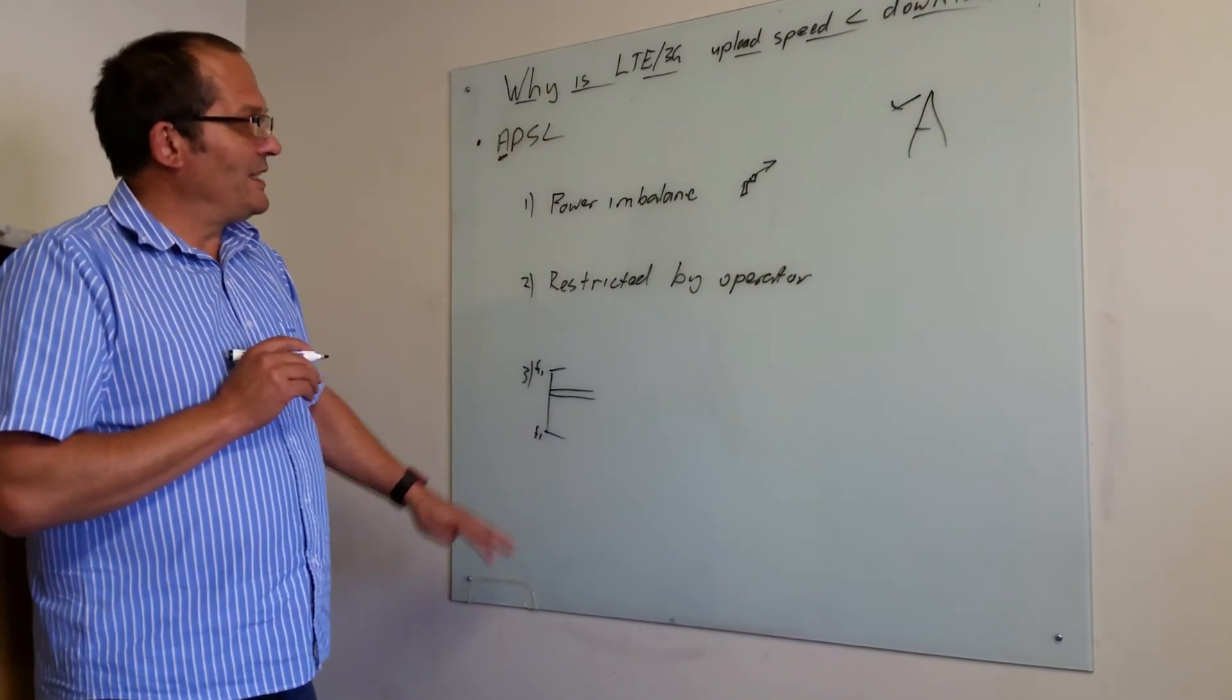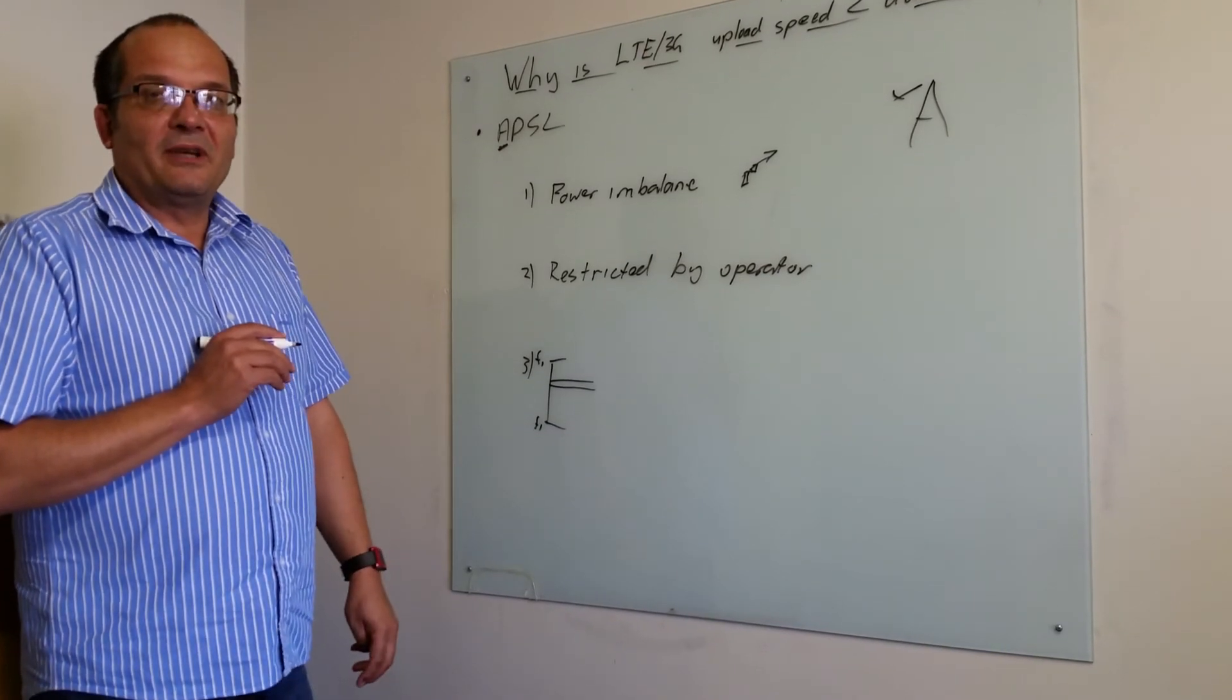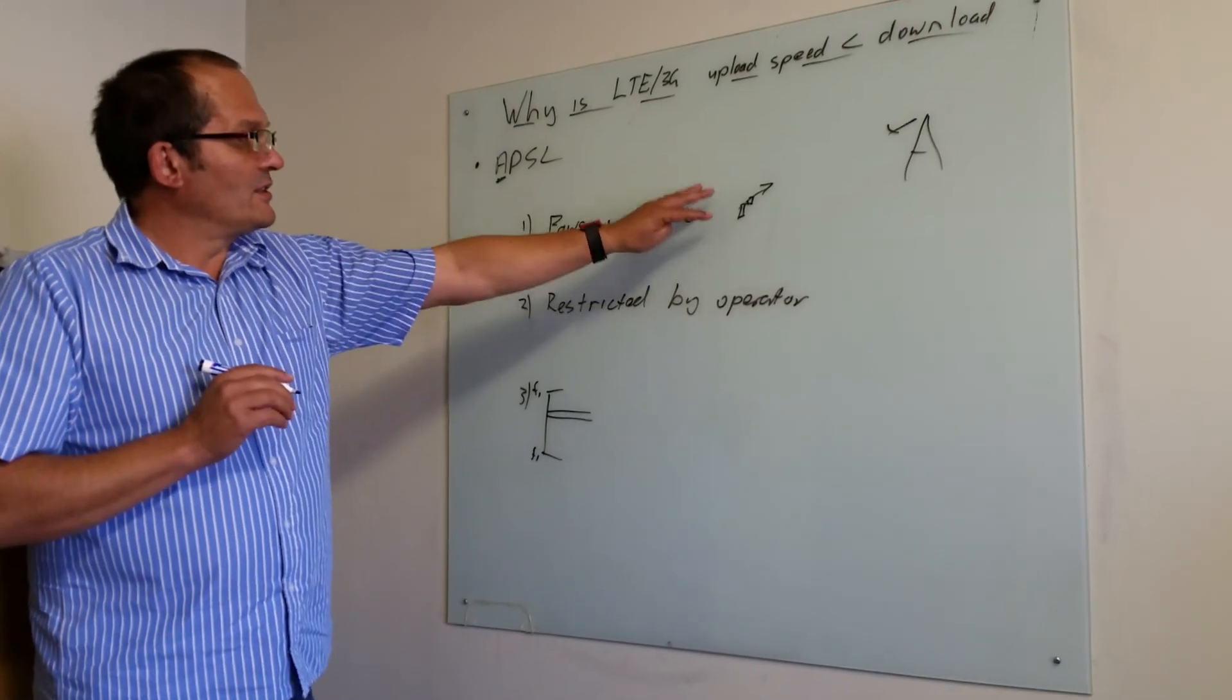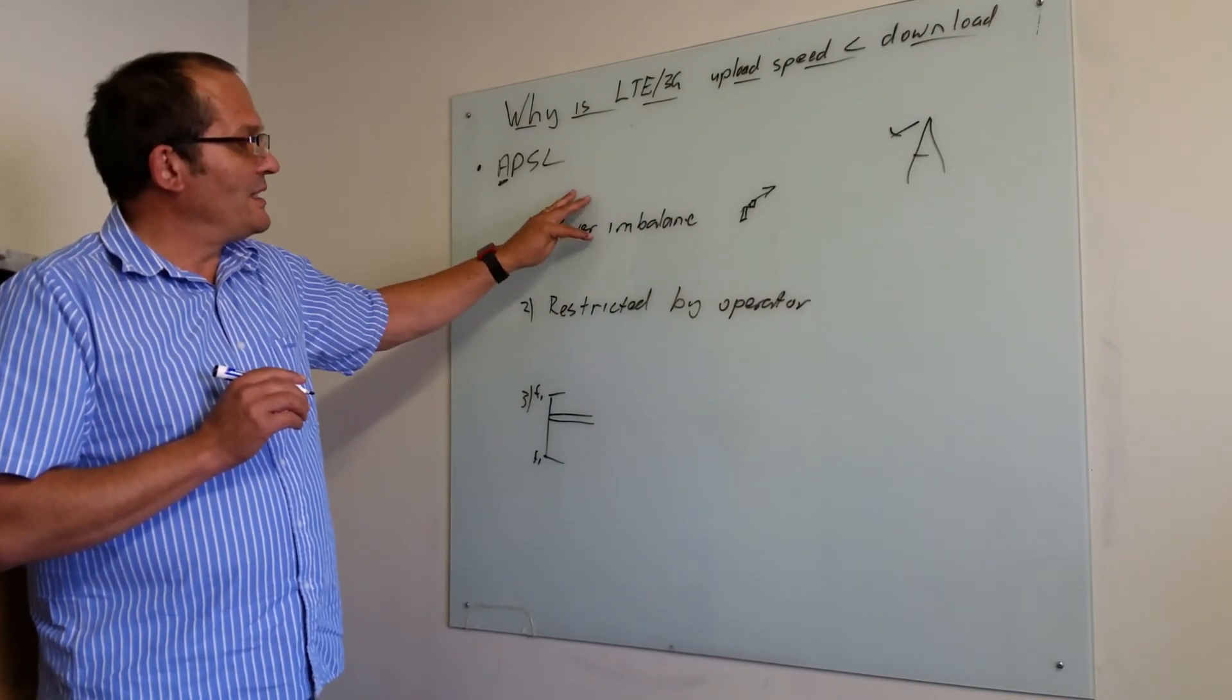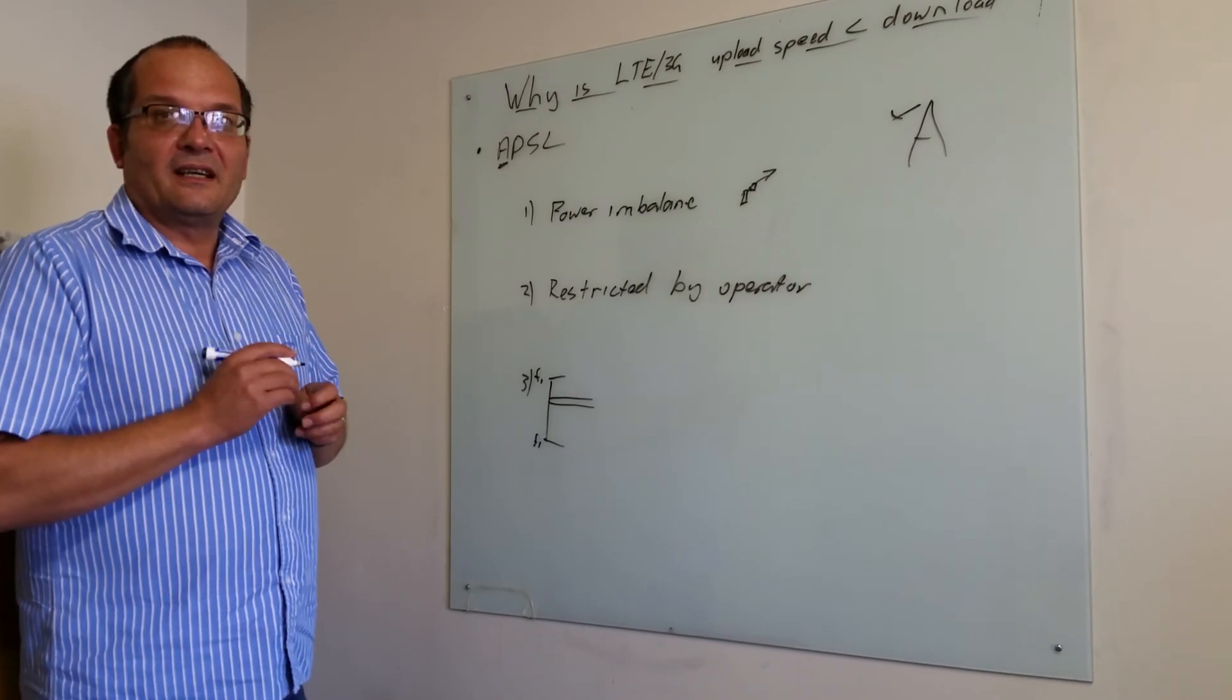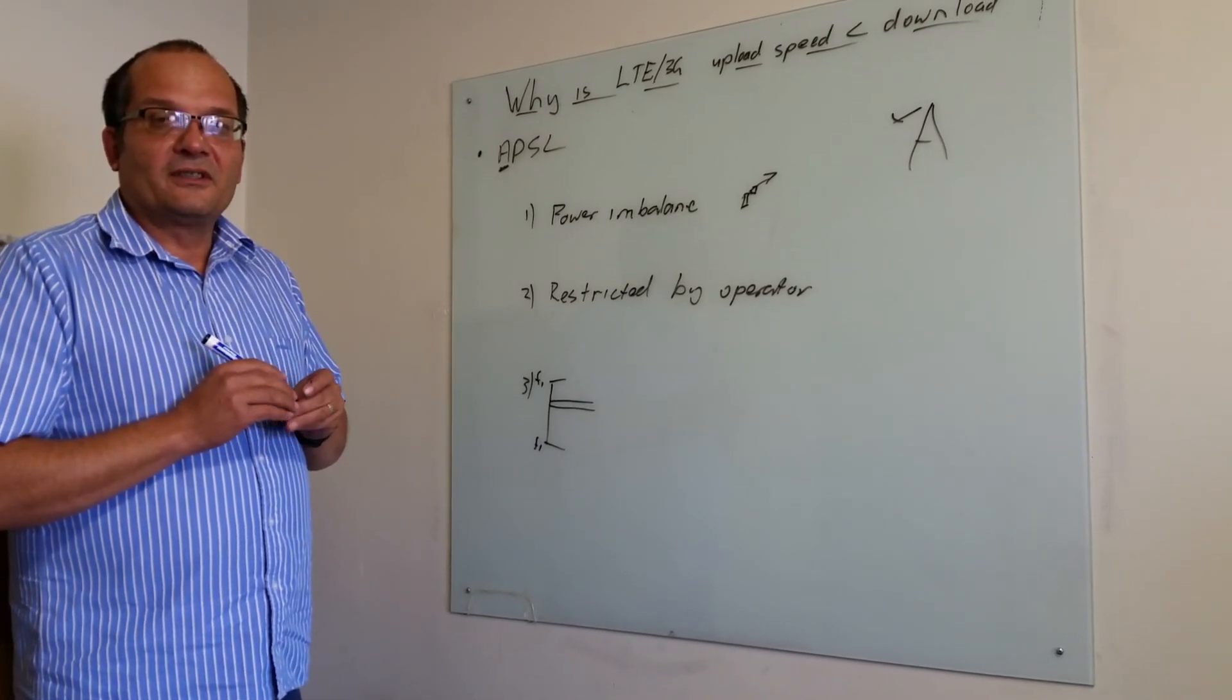So those are the three main reasons why we do find that uploads are slower than downloads, but it is something that needs to be fixed. Often just getting a strong signal so it doesn't matter that you've got power imbalance, and then of course the operators adjusting things so that our upload speeds match download speeds will solve the problem.